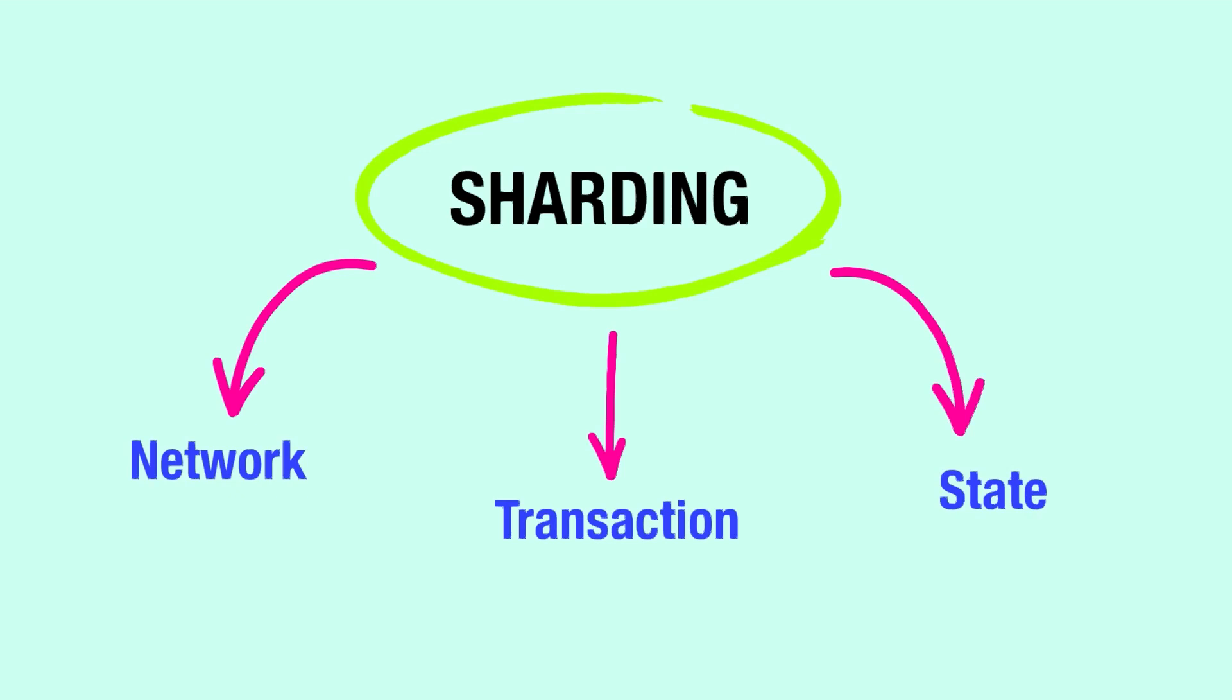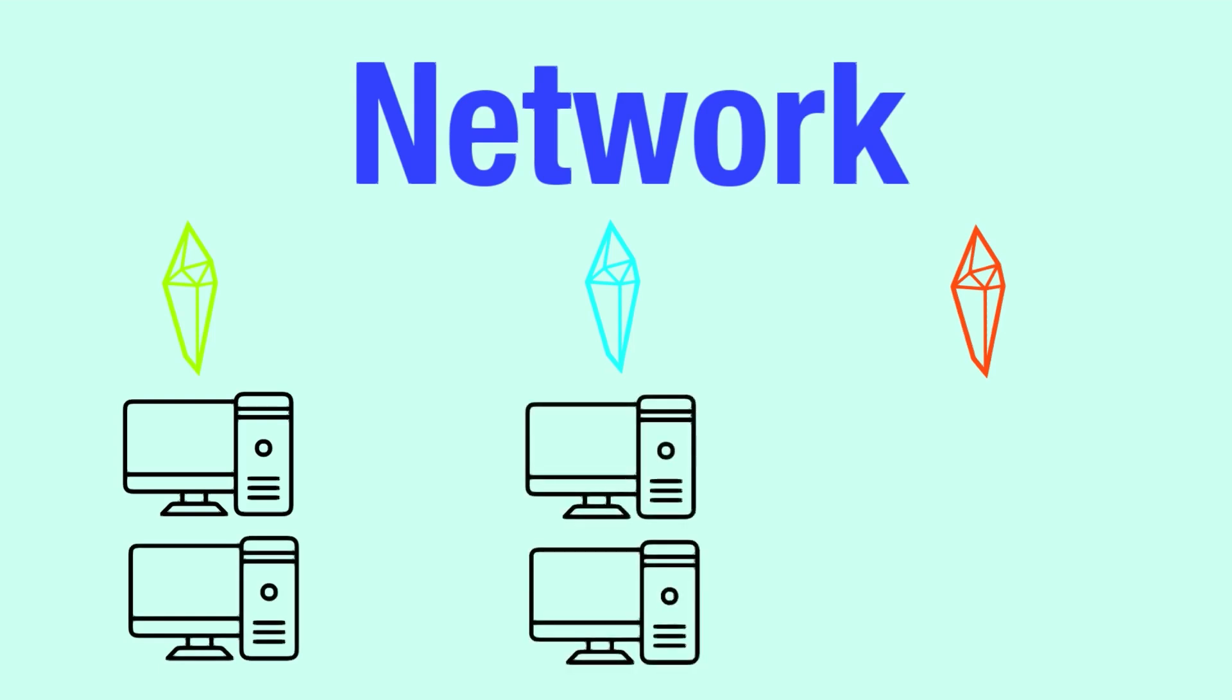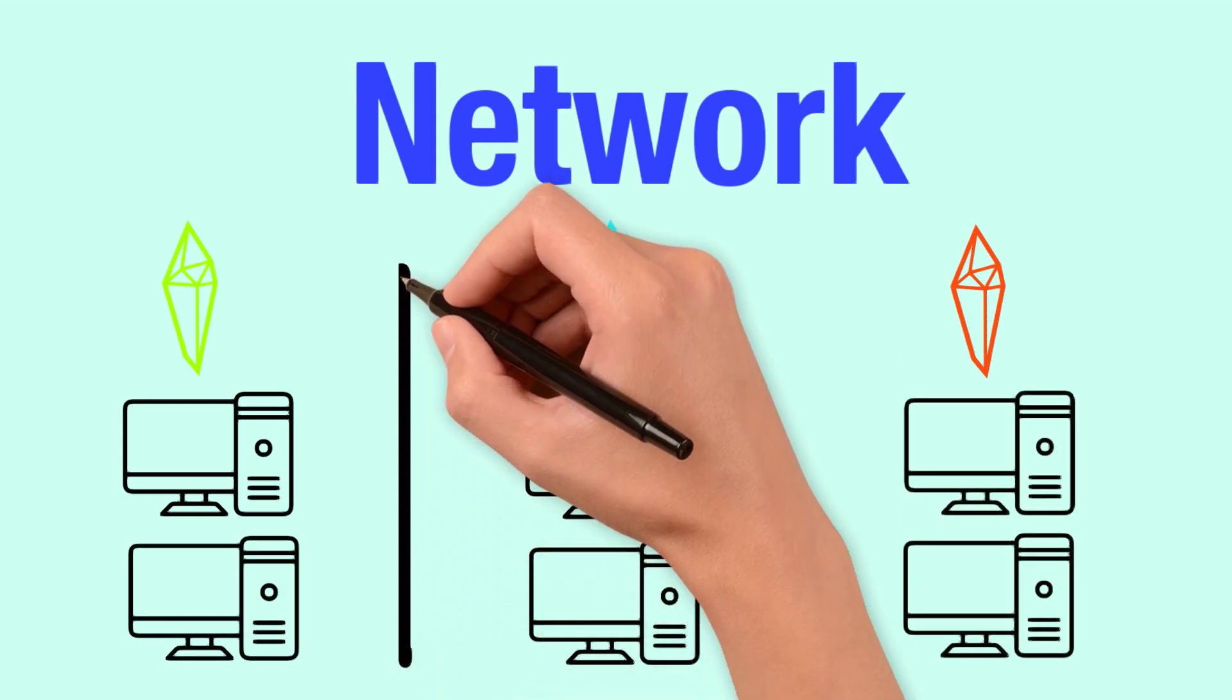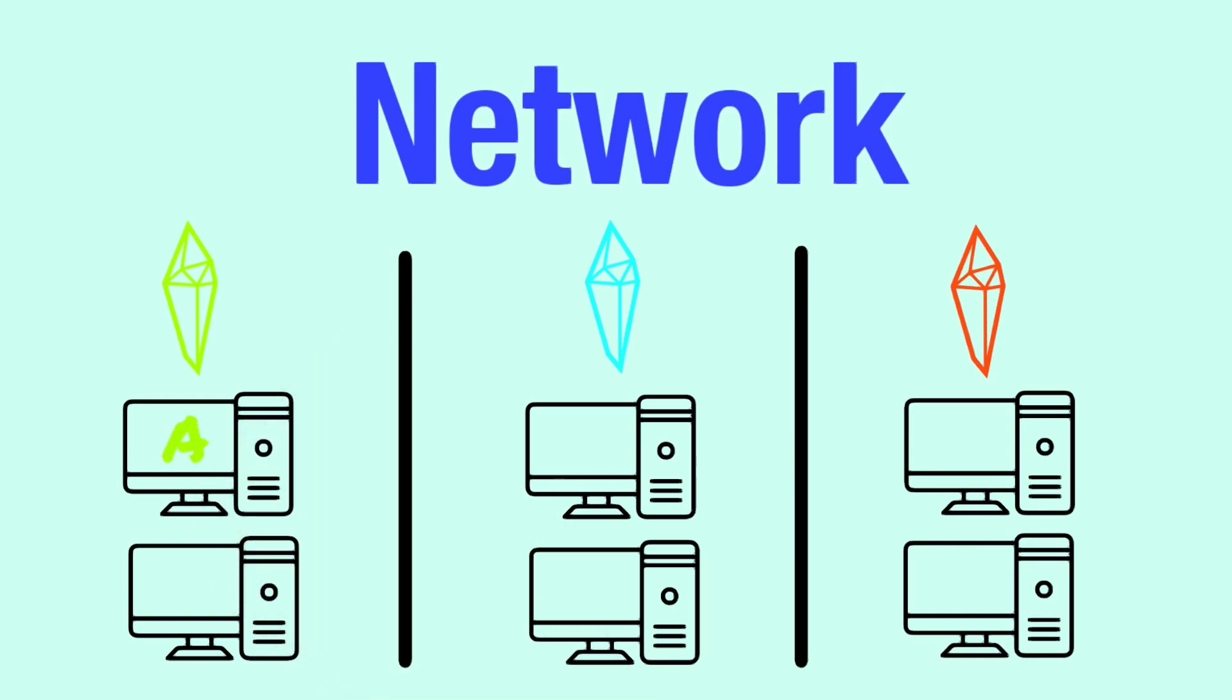Let's break these down to see how they enhance scalability. Network sharding organizes nodes into groups, or shards, which handle transactions separately. This segmentation speeds up processing by reducing the number of nodes involved in each transaction. Although this reduces the network bandwidth, each node must still validate and store all transactions within the shard.